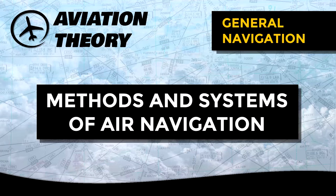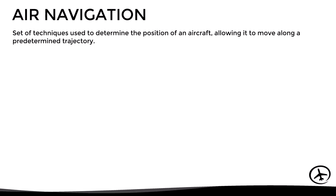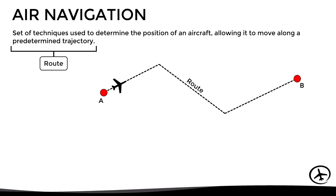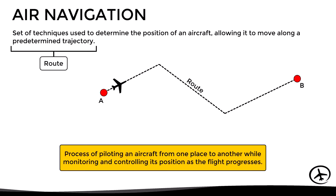Today we will look at the different methods, systems, and techniques used for air navigation. But first, let's see what air navigation is. It is defined as a set of techniques used to determine the position of an aircraft, allowing it to move along a predetermined trajectory, which is called a route. In simpler words, it is the process of piloting an aircraft from one place to another, while monitoring and controlling its position as the flight progresses.